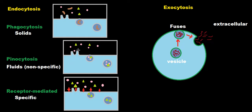In pinocytosis, the process is very non-specific, as mentioned. It grabs whatever it can — usually smaller particles. You can see it doing the exact same thing: enveloping and then breaking away to form a small vesicle inside the cell.